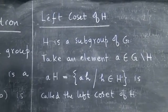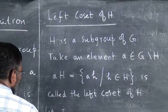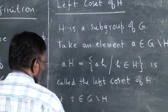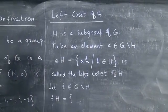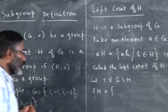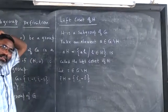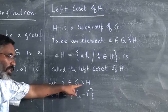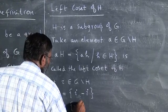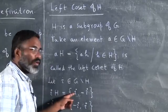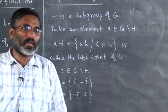In this example, consider i ∈ G but i ∉ H. The left coset iH = {i·1, i·(-1)} = {i, -i}. If we instead take -i ∈ G, then (-i)·H = {-i, i}, which as a set is the same as iH. So these two left cosets are not different — they are equal as sets.